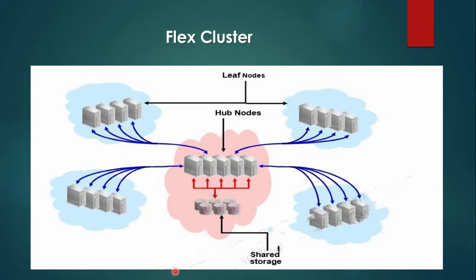In an Oracle Flex Cluster configuration, Hub Nodes also provide storage service for one or more Leaf Nodes. As per this slide, Flex Cluster uses Hub and Spoke Topology. Basically, Flex Cluster is a group of Hub Nodes, with the condition that zero or more Leaf Nodes may be connected to a Flex Cluster. Each Leaf Node is connected to the cluster through the Hub Nodes, so Leaf Nodes do not need to connect directly to the storage.